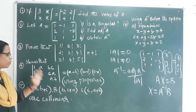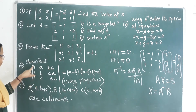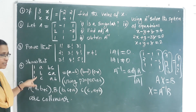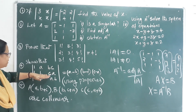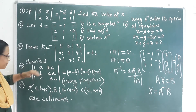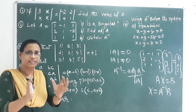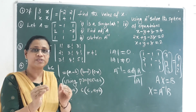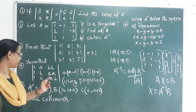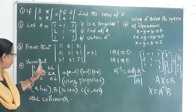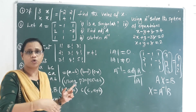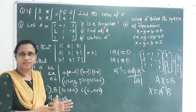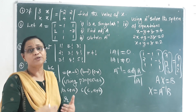Properties are used to solve these questions because doing them directly would be very tedious. If you apply row operations step by step, it becomes easy. When a row becomes all zeros, the determinant is zero. By subtracting one row from another we can reduce rows, and by adding rows we can simplify further to find the determinant efficiently.